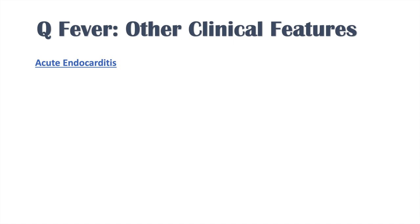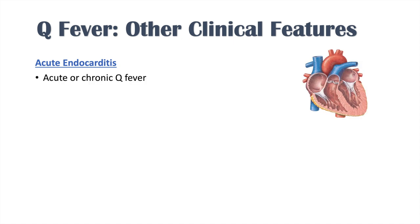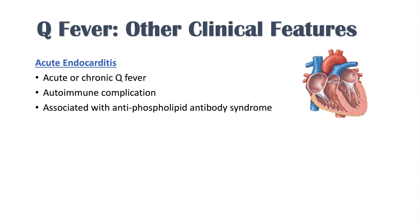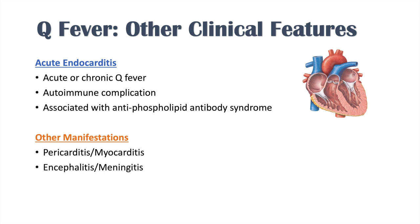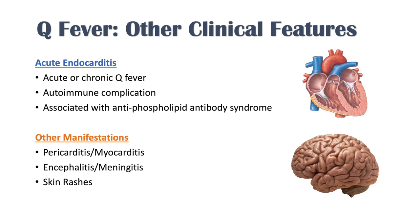Some other clinical features include acute endocarditis, which can occur in acute or chronic Q fever. It has an autoimmune component and is associated with antiphospholipid antibody syndrome. Other manifestations include pericarditis and myocarditis, encephalitis or meningitis, and skin rashes that are generally maculopapular in description. Q fever is incredibly variable with regards to its clinical presentation.